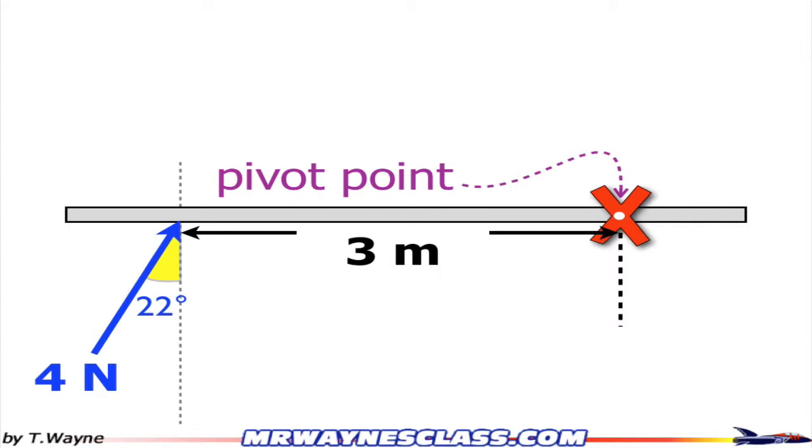That vertical line is perpendicular to the beam, and that force is applied 3 meters away from the pivot point, which is sometimes referred to as the axis or axis of rotation.